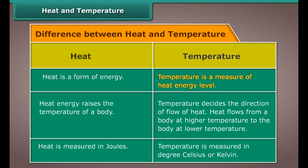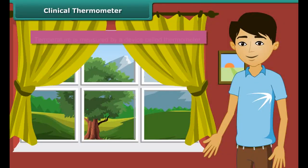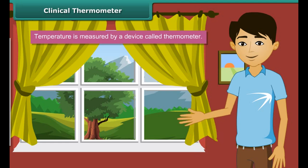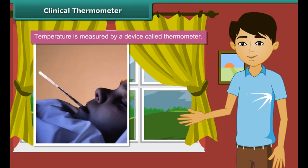The table shows the difference between heat and temperature. Heat is a form of energy; temperature is a measure of heat energy level. Heat energy raises the temperature of a body, while the temperature decides the direction of flow of heat. Heat flows from a body at higher temperature to a body at lower temperature. Heat is measured in joules; temperature is measured in degree Celsius or Kelvin.